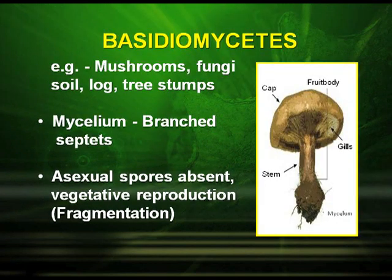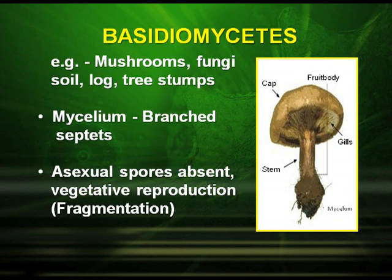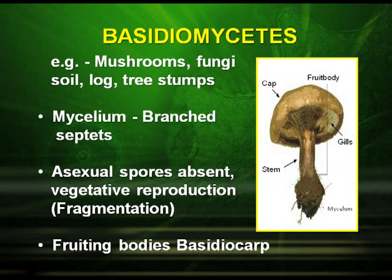Basidiomycetes — example, mushroom fungi. They are found in soil, logs, and tree stumps. The mycelium is branched and septate. Asexual spores are absent. Vegetative reproduction takes place by fragmentation. The fruiting bodies formed are known as basidiocarps.